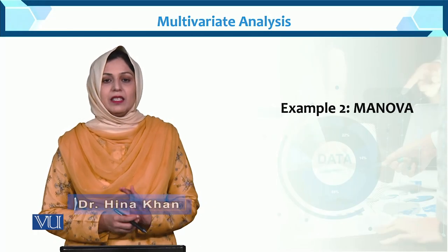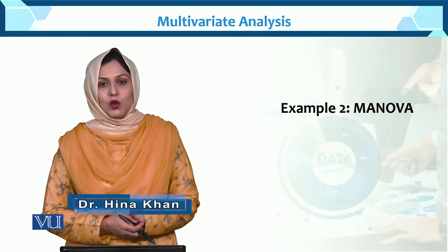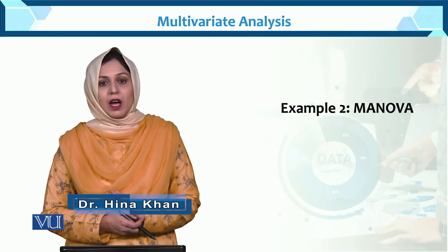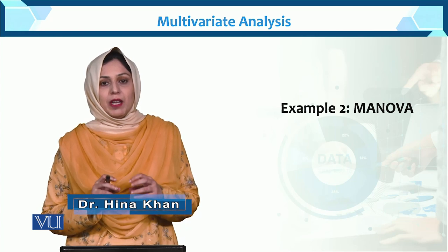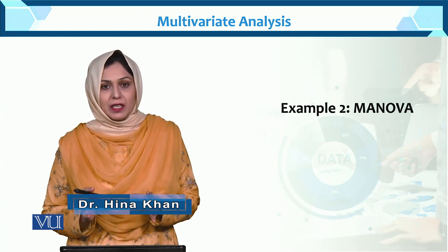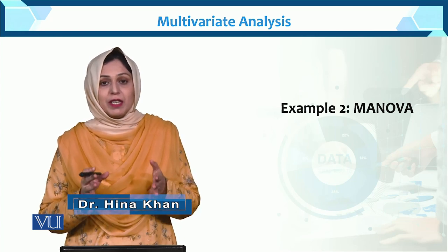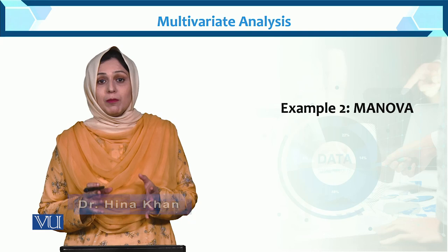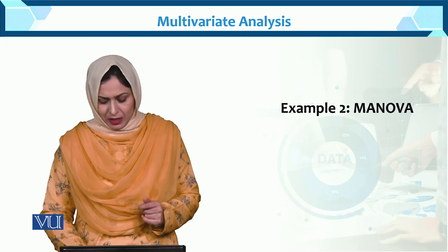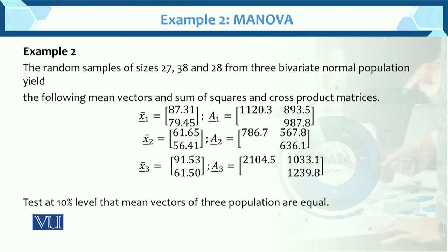This is another example of MANOVA. In this example, we do not have raw data. We have data in matrix form — sum of squares form data. So how do we use this example? This is example number 2.